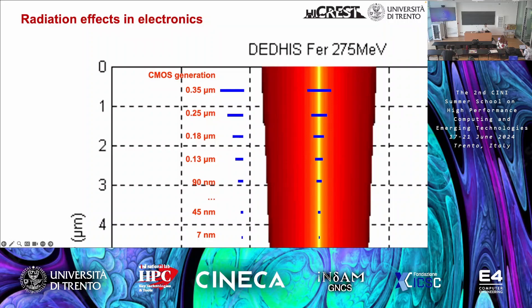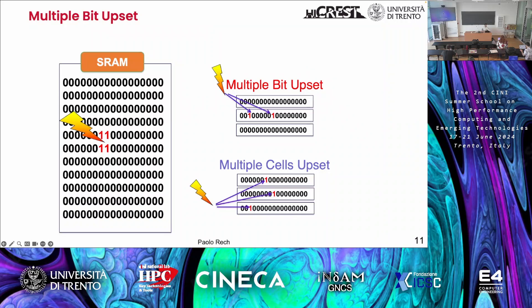If the transistor is part of memory, a single particle can corrupt multiple bits. These multiple bits can be part of the same word — called a multi-bit upset — or spread in different words, a multiple cell upset. If you have single error correction, double error detection ECC in your GPU or CPU, the multiple bit upset will not be corrected because it's a double bit in the same word. You don't know what to do, and basically you crash the application.